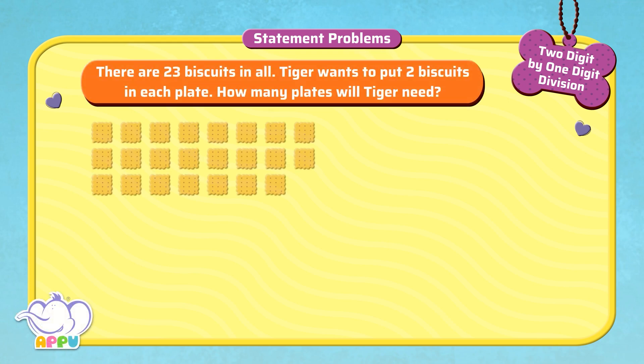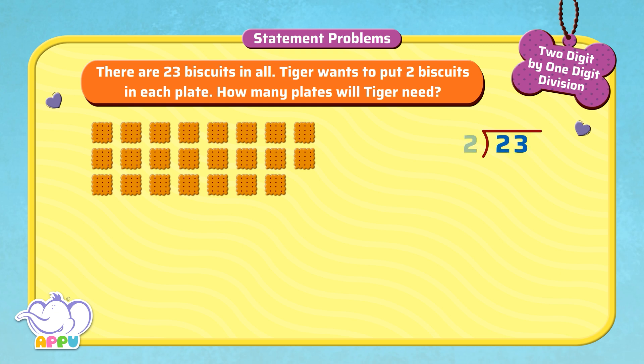There are 23 biscuits in all. Tiger wants to put 2 biscuits in each plate. How many plates will Tiger need? We find this by dividing 23 by 2.